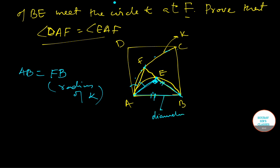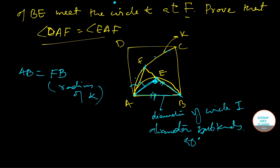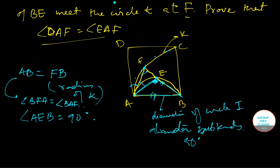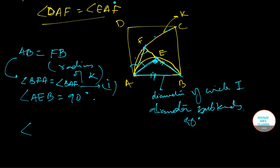Since the angle subtended by a diameter is 90 degrees, angle AEB equals 90 degrees. Also, since FB equals AB, triangle FAB is isoceles, which gives us angle BFA equals angle BAF. We take this as equation one.